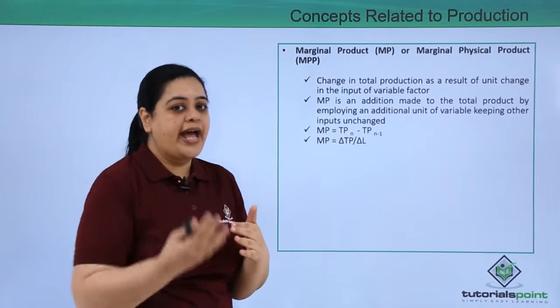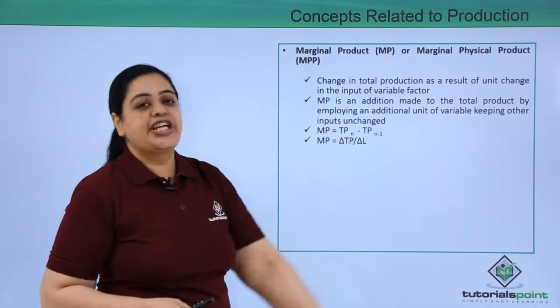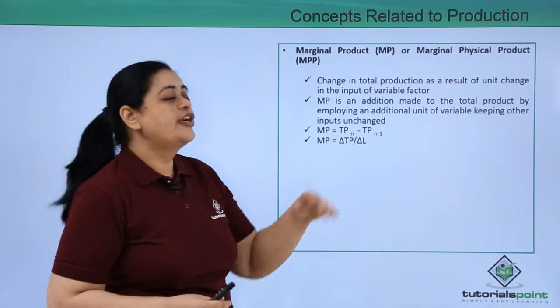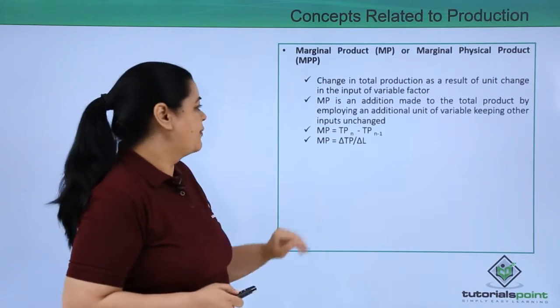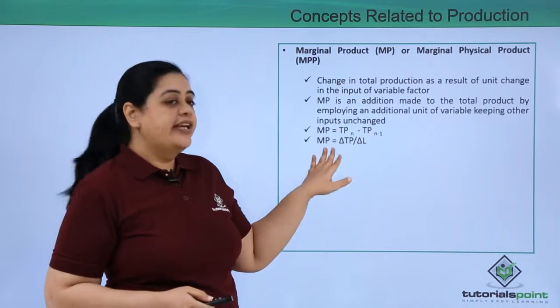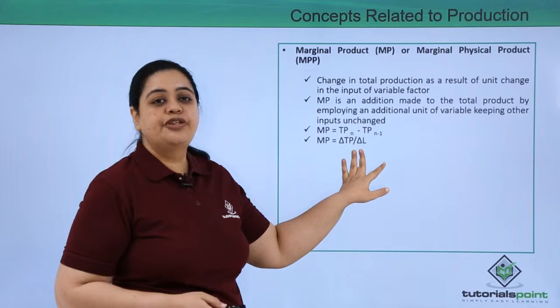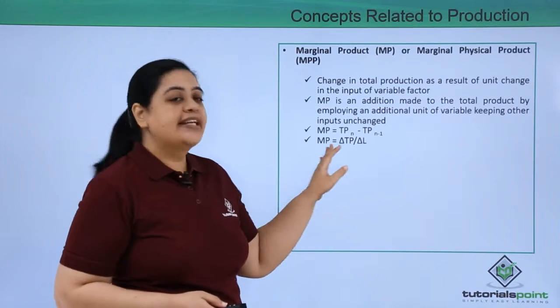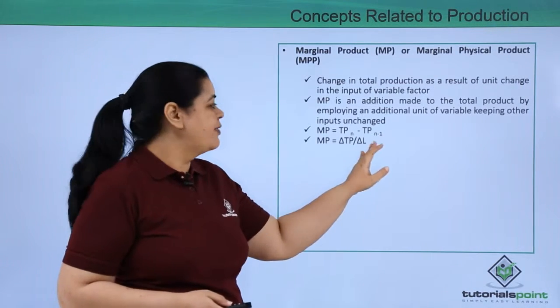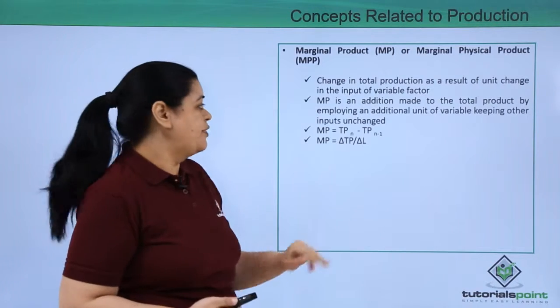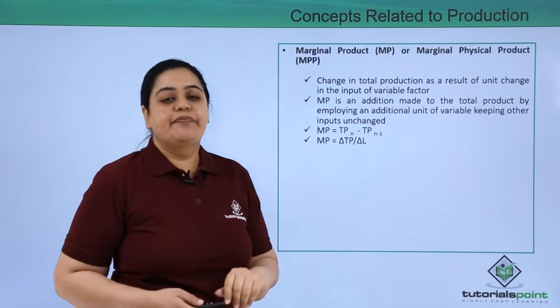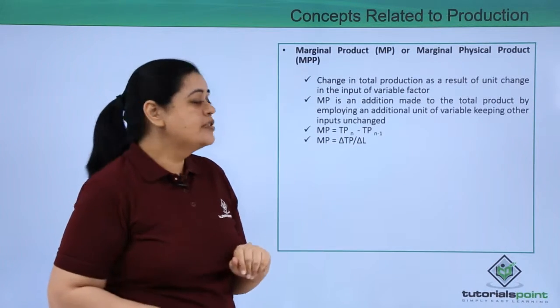So whenever you add one more variable unit, there would be a change in the total product and that is what MP is all about. Now if I have to give you an equation for this, it would be MP is equal to delta TP, that is change in TP, divided by delta L, which is change in labor, or you can say TPN minus TPN minus 1.